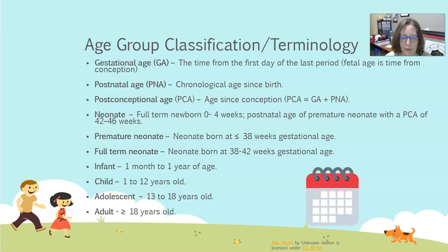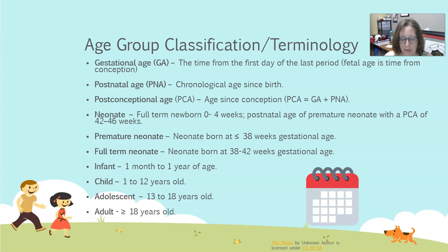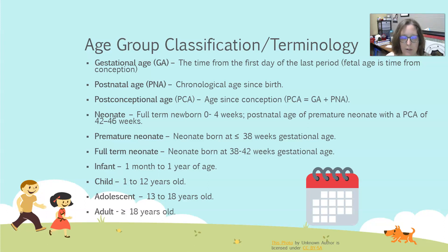An infant is from the first month to the first year of age — once they've hit their one-month anniversary, they're no longer a neonate but an infant, until they turn one. A child is from one to 12 years old, and sometimes we break those down into specific age ranges. An adolescent is 13 to 18 years old, and adults are 18 years and older.